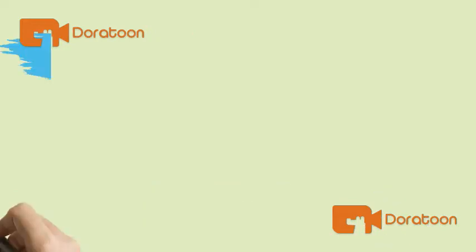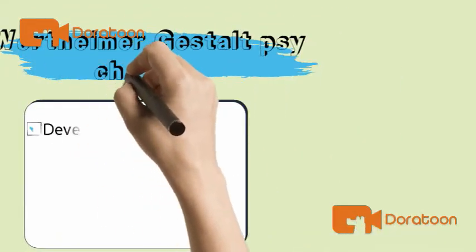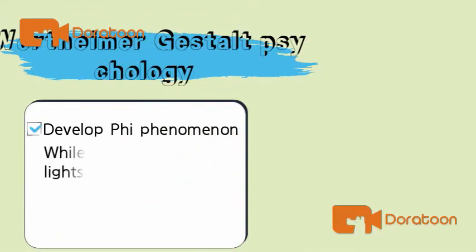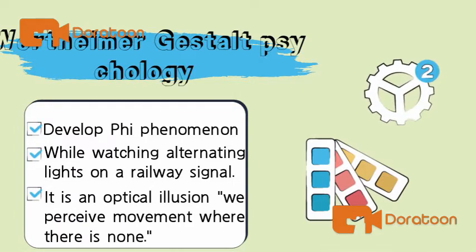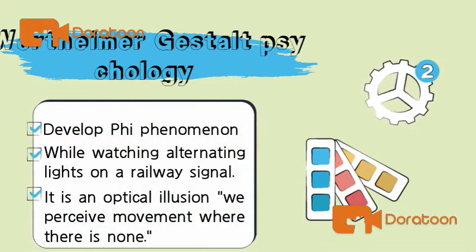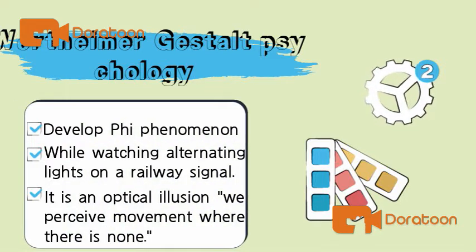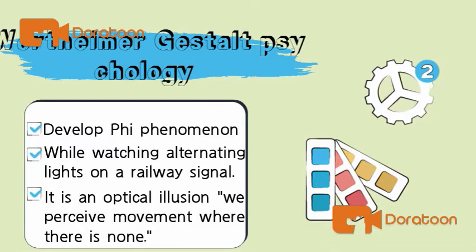Wertheimer developed Gestalt psychology after observing what he called the phi phenomenon while watching alternating lights on a railway signal. The phi phenomenon is an optical illusion where two stationary objects seem to move if they are shown appearing and disappearing in rapid succession. In other words, we perceive movement where there is none.